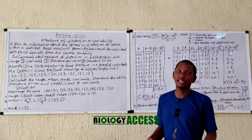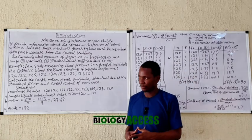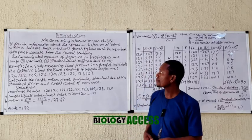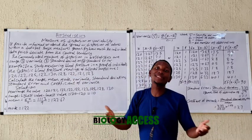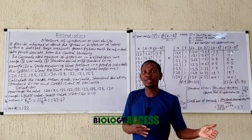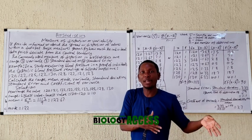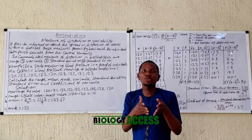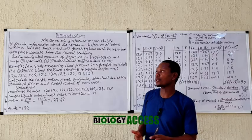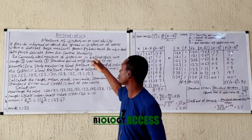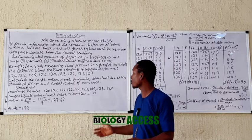Welcome to Biology Access. In today's class we'll be discussing biostatistics part 2, talking about measures of dispersion or variability. Measures of dispersion deal with how data are spread out or how they deviate from the typical point, unlike measures of central tendency which focus on the central value. There are many measures of dispersion commonly used in biostatistics, including range, variance, standard deviation, standard error, and coefficient of variation.